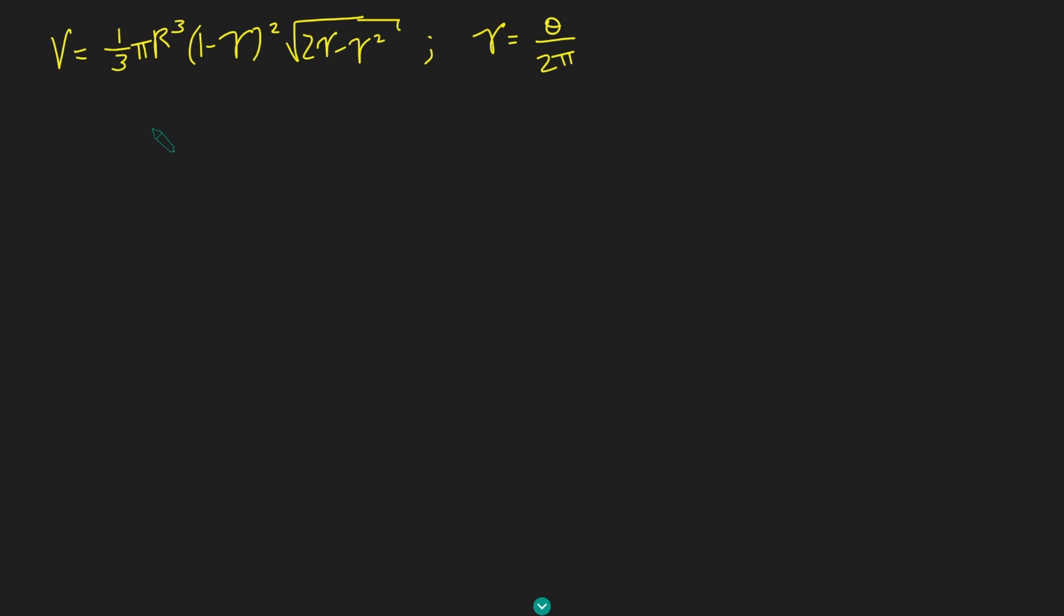We've got the volume in terms of gamma, where gamma is theta over 2 pi. We're trying to maximize our volume. We could just straight away differentiate this. While we'd have to decide whether we want to differentiate with respect to gamma or theta, turns out it doesn't actually matter. But it turns out I'm actually not going to differentiate with respect to either of these. There's a quite a nice observation here is if we let a third variable, which I'm going to call psi here, equal 1 minus gamma. We can see that the volume is just a third pi r cubed times psi squared times the square root of 1 minus psi squared.